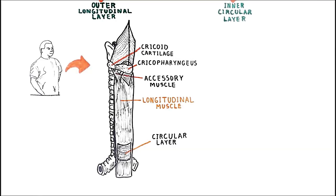The circular muscle layer provides the sequential peristaltic contraction that propels food toward the stomach. The upper third of the esophagus is composed of striated muscle, whereas the lower remaining portion is smooth muscle. This means we have voluntary control of the upper portion when swallowing, but no control of the lower two-thirds. The transitional zone, where striated changes to smooth muscle, contains both types.